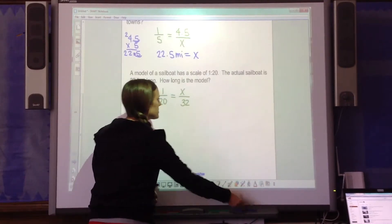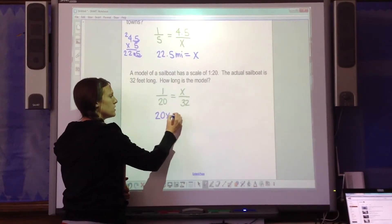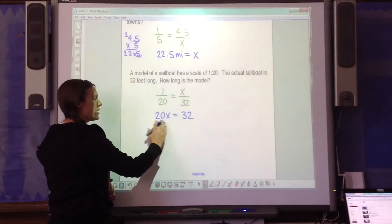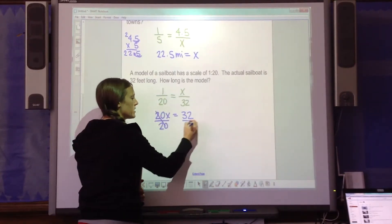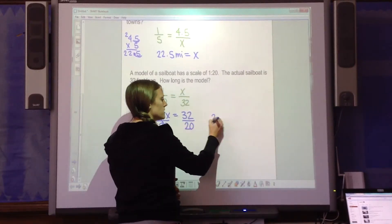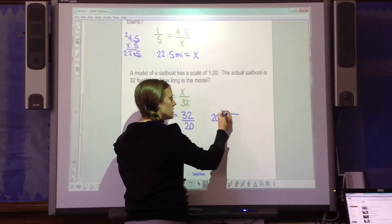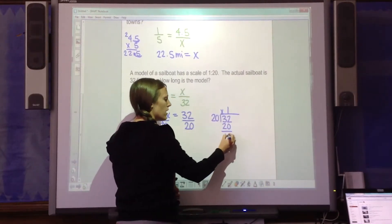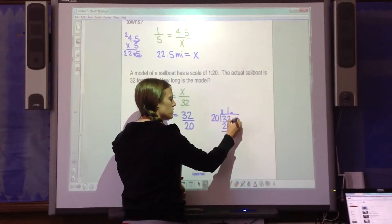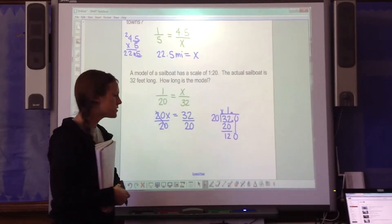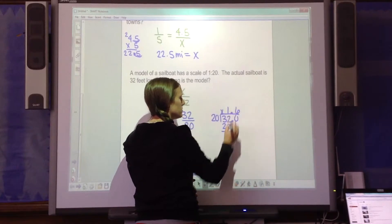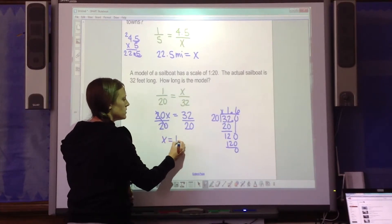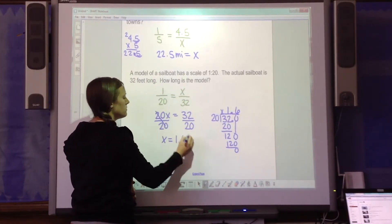So I'm going to use cross-product. I'm going to multiply across 1 times 32 is 32. I do have to solve this time. To solve an equation, I want to get x by itself. So I'm going to divide both sides by 20. I want to see how many times 20 goes into 32. 20 times 1 is 20. 32 minus 20 is 12. So I have to keep going. So I add a decimal and drop a 0. 20 goes into 126 times. So my model is 1.6 feet long.